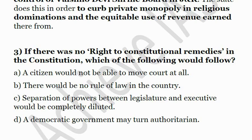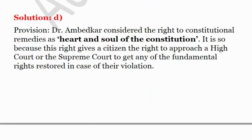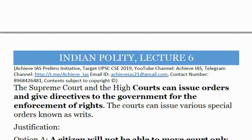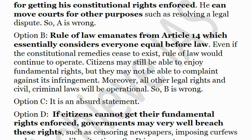Option C is certainly not correct. The answer is D — the lack of constitutional remedies makes a democratic government authoritarian, because if there are no limits on the state's power that it cannot cross, it will certainly lead to authoritarianism. So the answer is D.